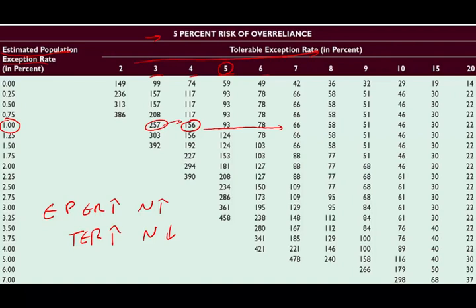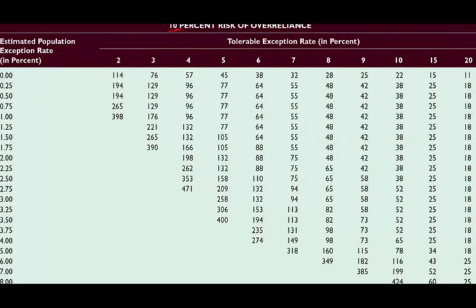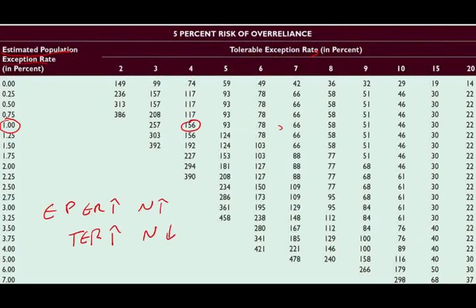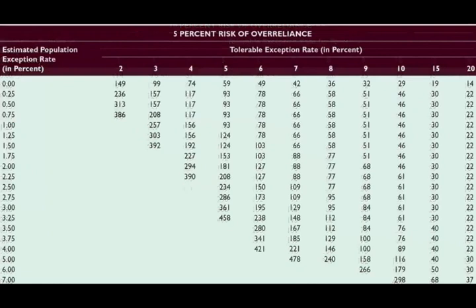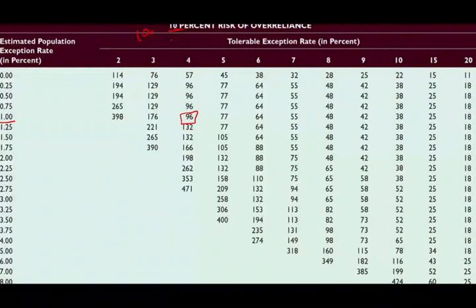Comparing tables: with EPER = 1% and TER = 4% at 5% ARO, the required sample is 156. Using the 10% ARO table with the same EPER and TER, the sample drops to 96. As the risk of over-reliance goes up, you do less work — a direct relationship between higher ARO and smaller sample size.